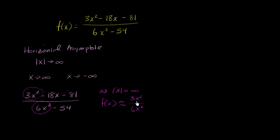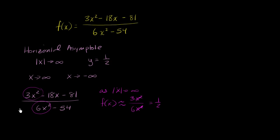If we look at just those dominant terms, f(x) is going to get closer and closer to 3/6, or 1/2. So we can say there is a horizontal asymptote at y equals 1/2.